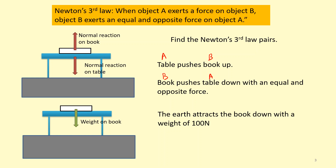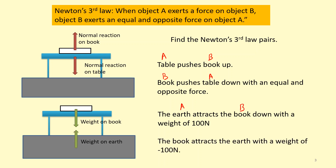What about the weight of the book? It's actually the Earth attracting the book downward. Counterintuitively, the Newton's third law pair is that the book is also pulling the Earth upward. There is a force on the Earth from the book, but since the force might be 100 newtons and the mass of the Earth is huge, we don't actually see the Earth accelerate.